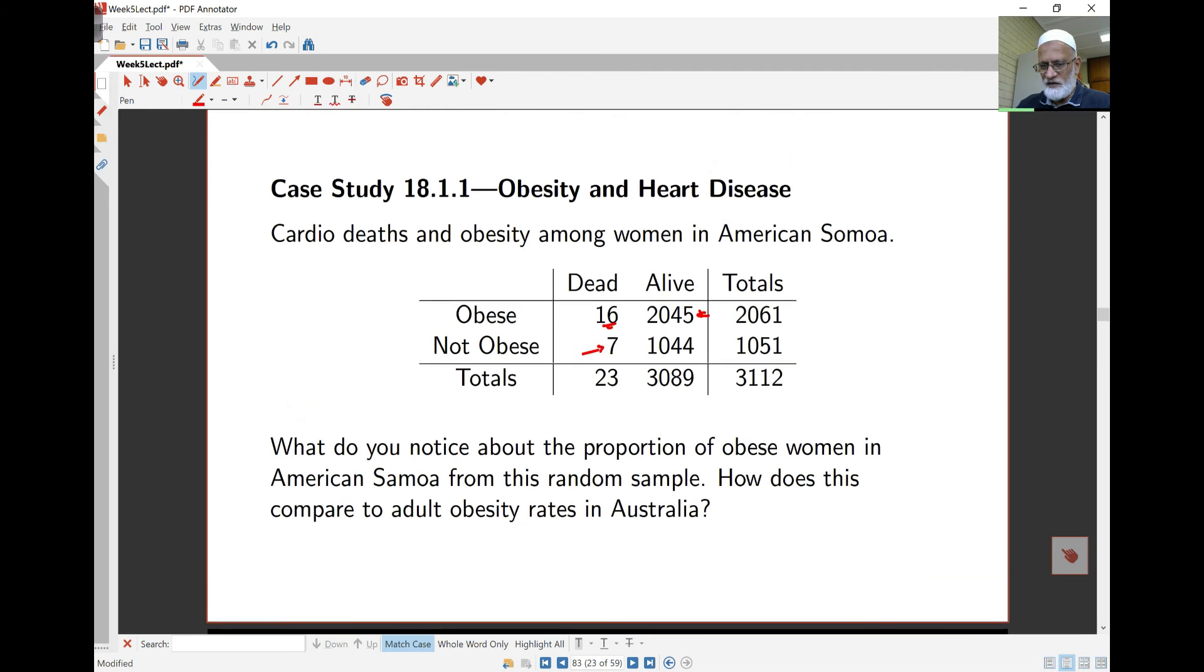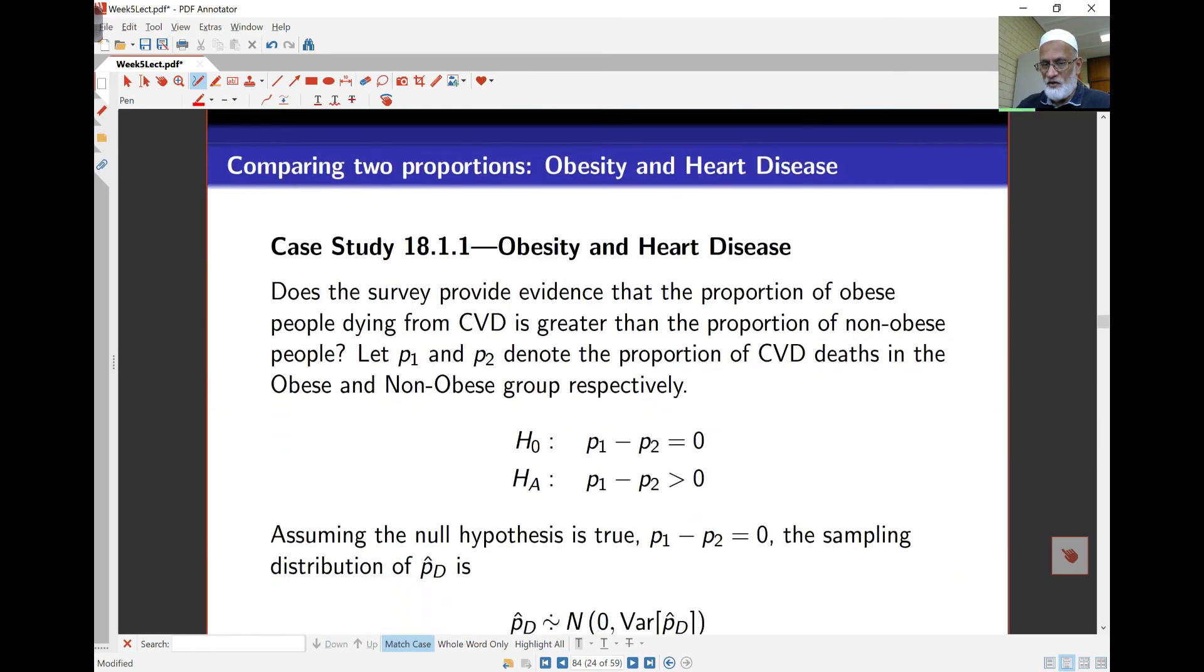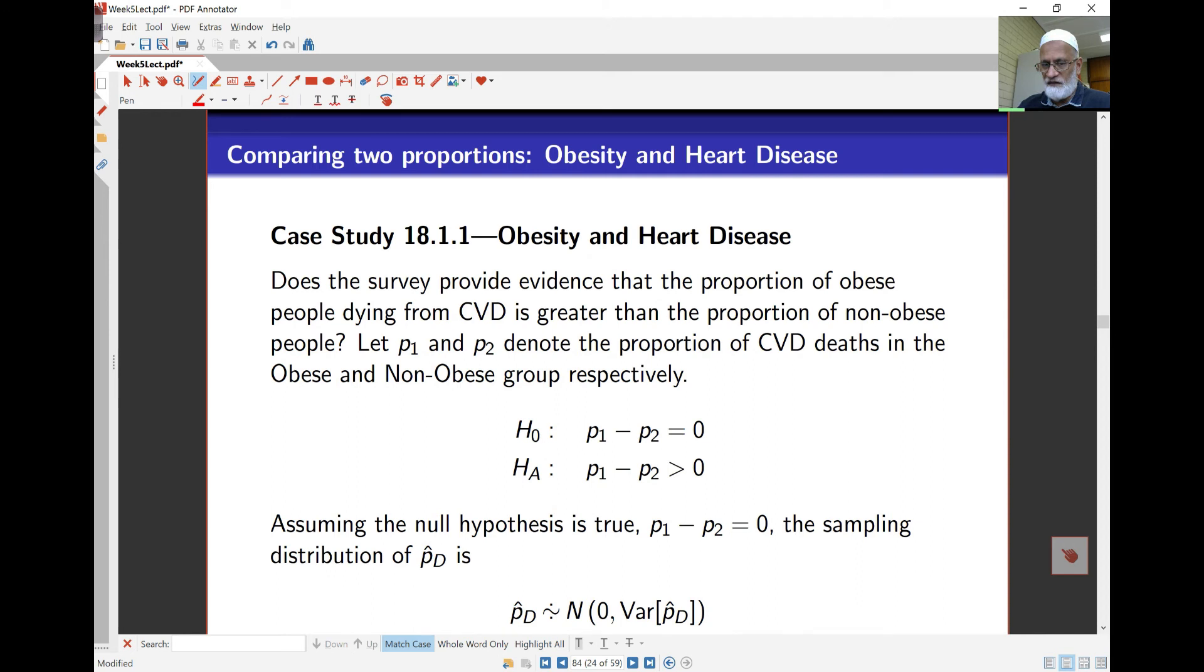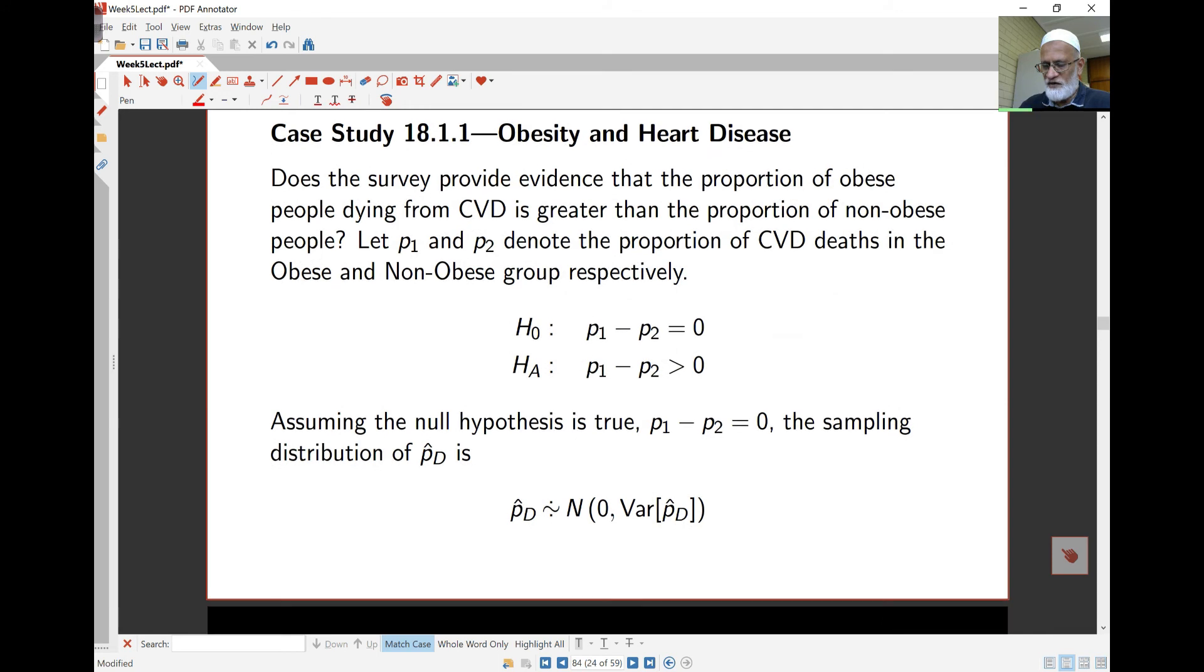If you look at this, how does this compare with adult obesity rates in Australia? In our sample there, we've got about a third obesity I think you will find in Australia. It's not that much different actually. So in this case, we're looking to see whether there is evidence that there is some relationship between cardiovascular disease, deaths from cardiovascular disease, and the proportion of obese and non-obese people.